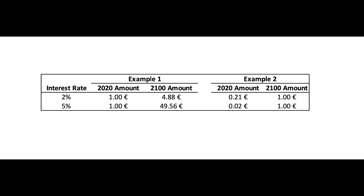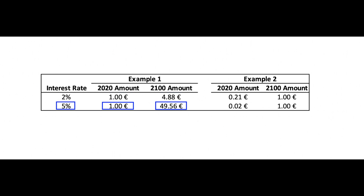Let's start with a simple example. If you invest 1 euro in 2020 at a 2% interest rate, you get an amount of 4.9 euros back in 2100, so about 4 times more than what you started with. But if you invest it at a 5% interest rate, you get 49.6 euros.